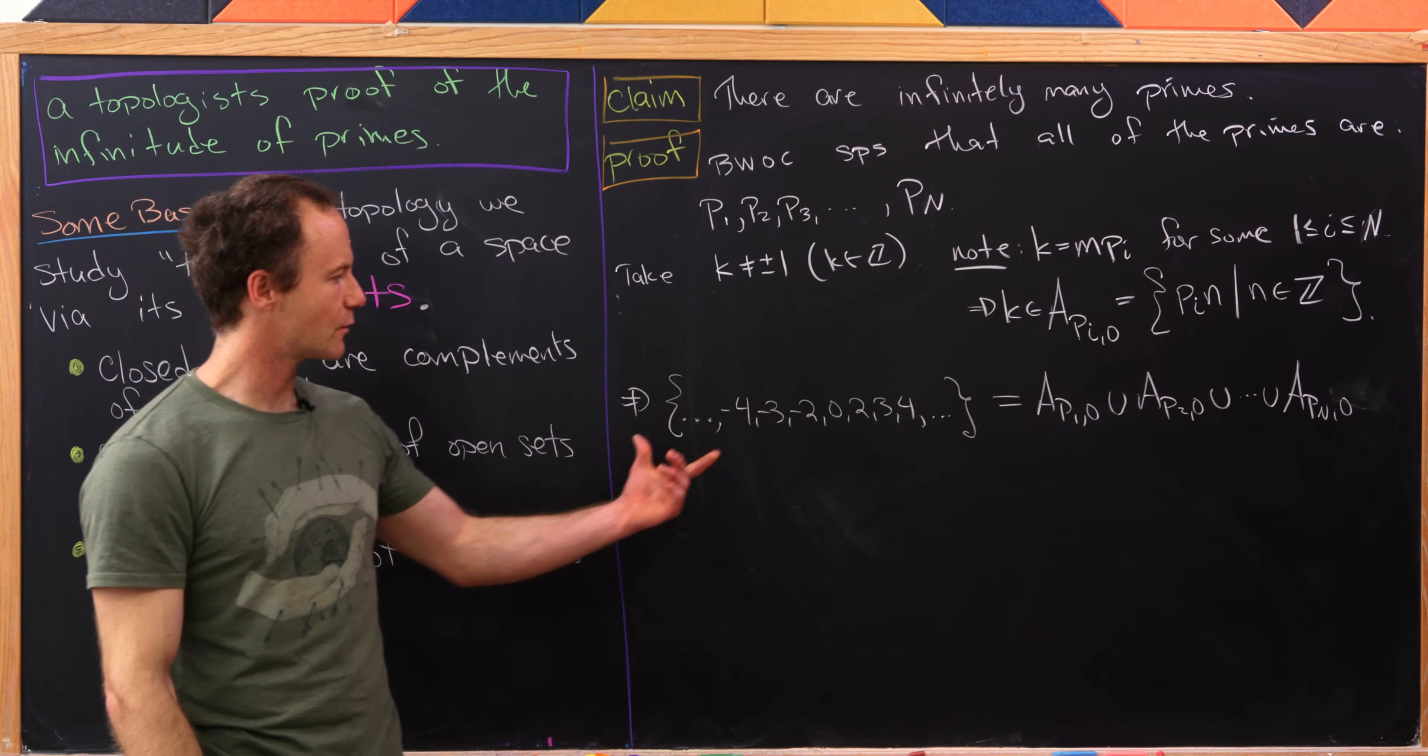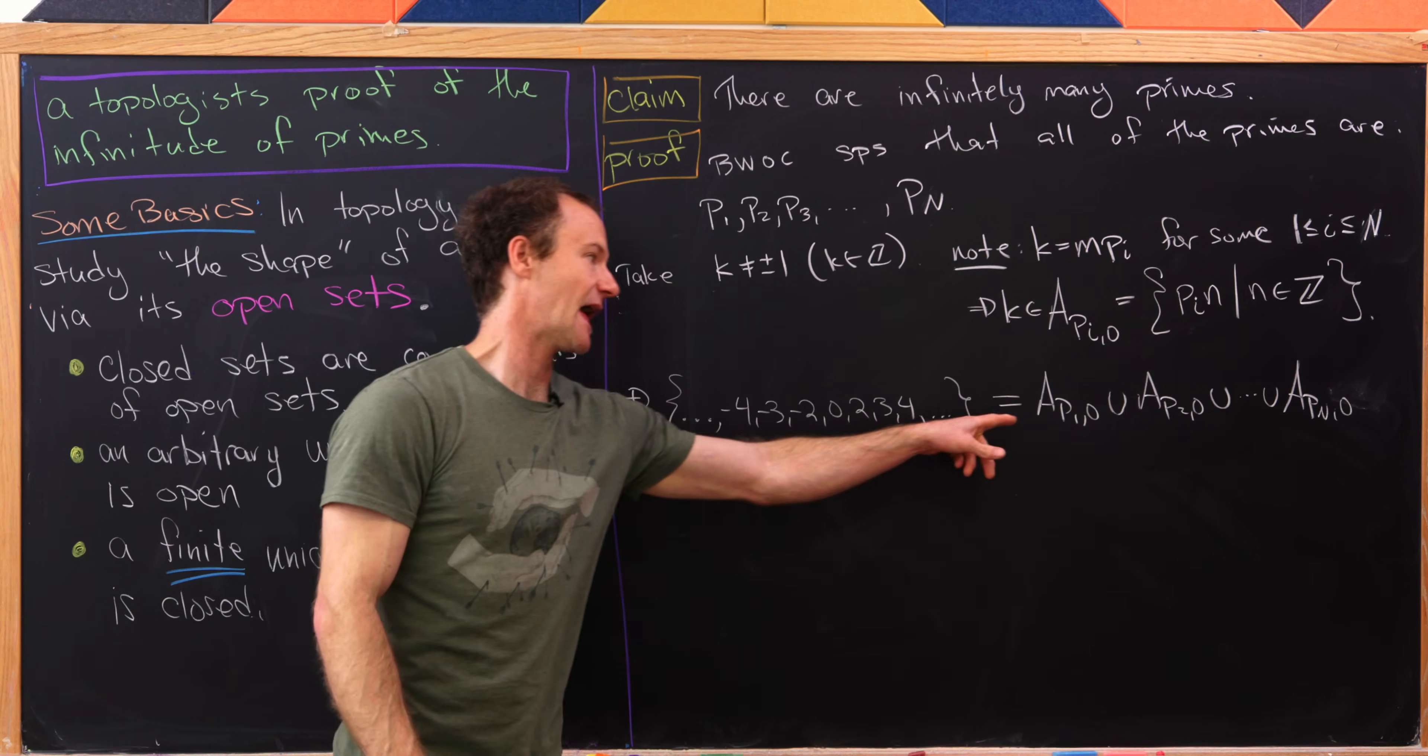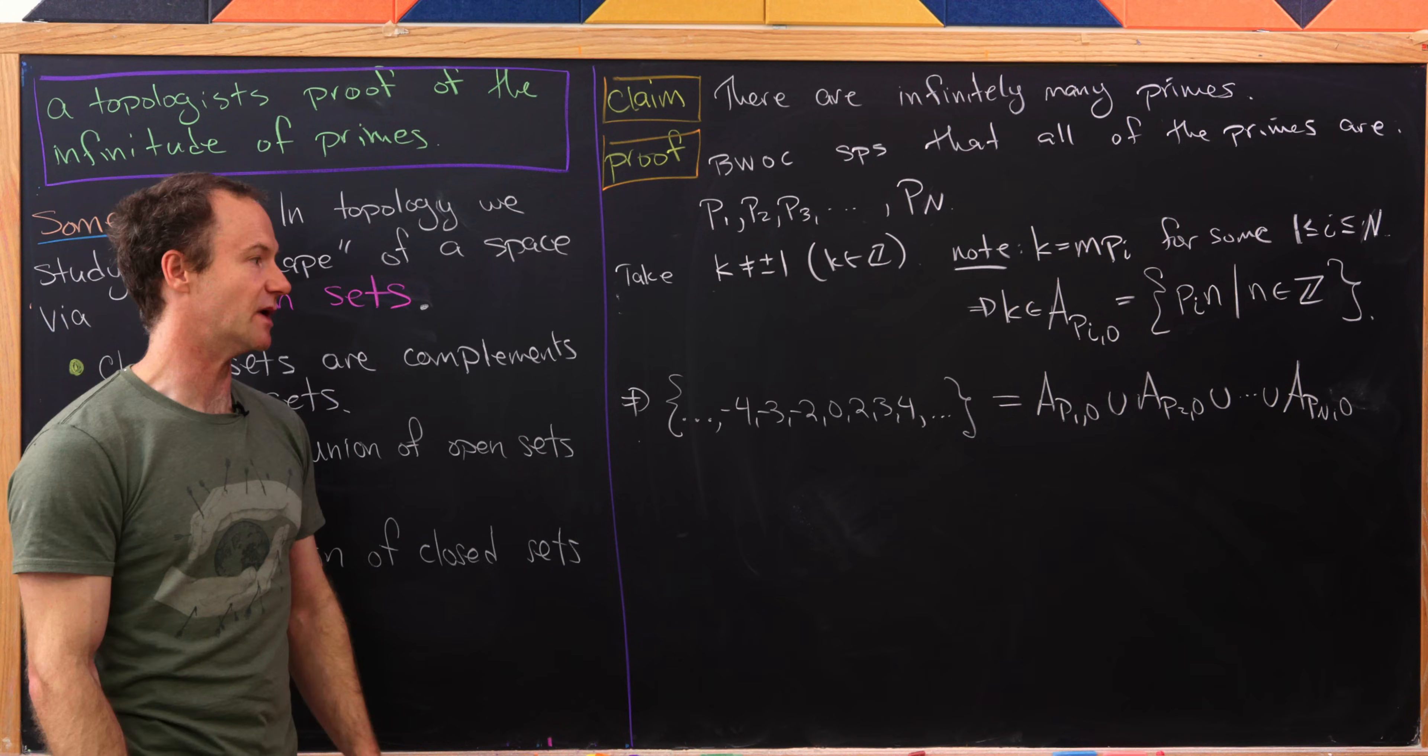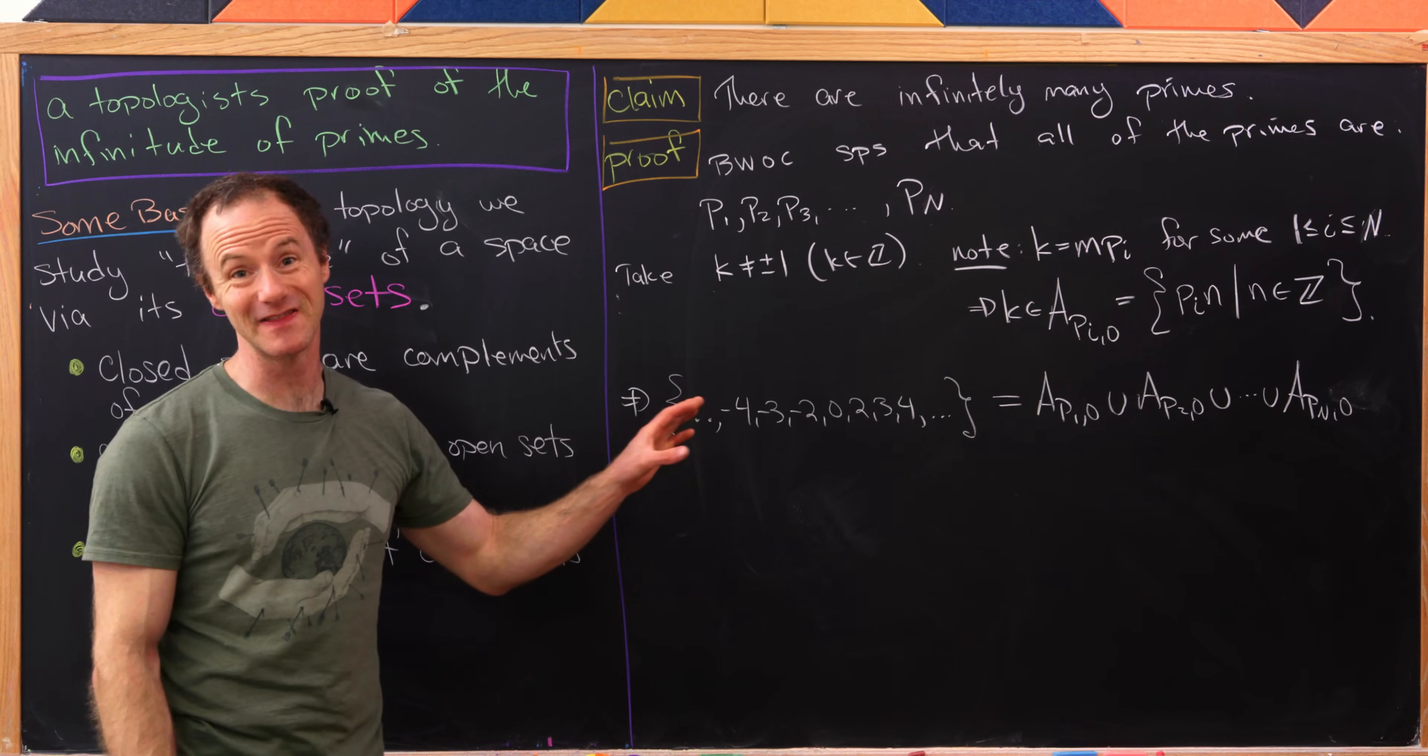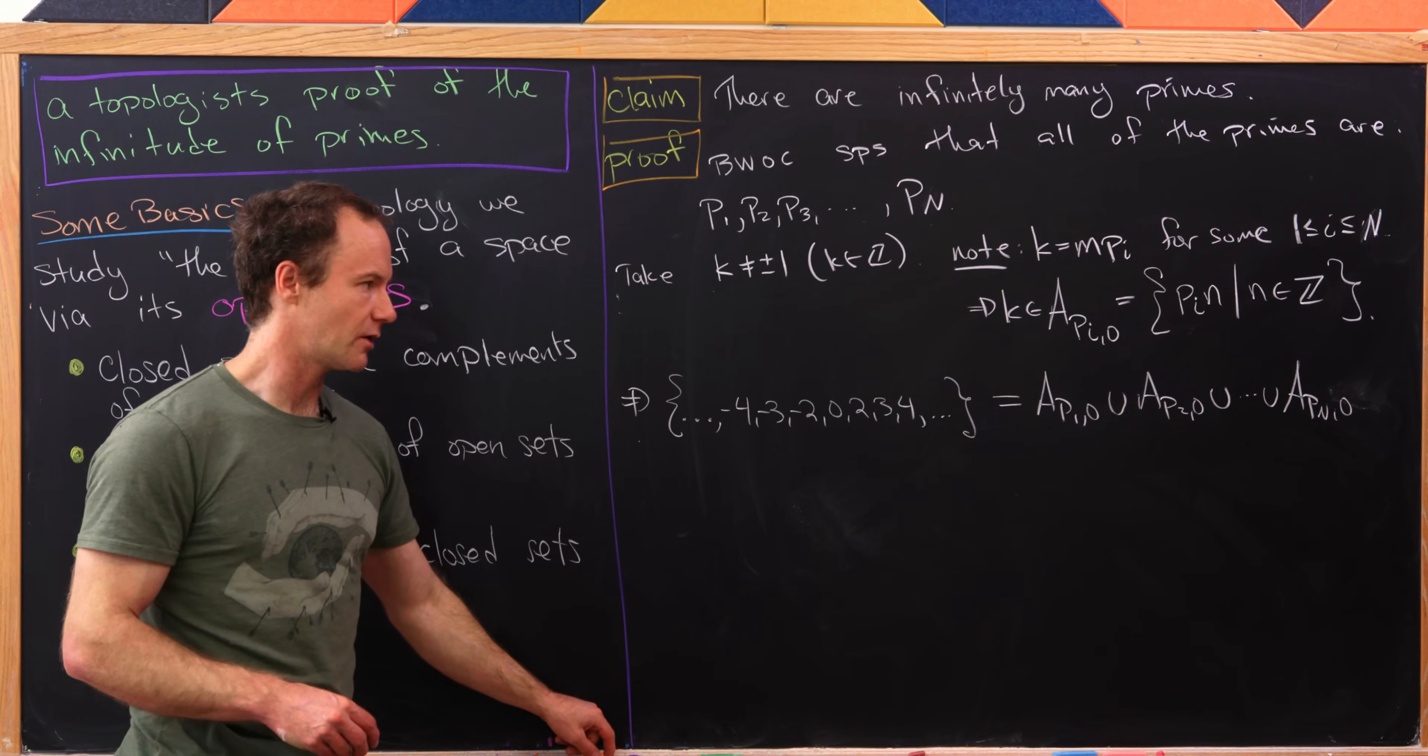Again, how do we know that? Well, we took some random person from here and it had to be in one of those sets by this argument that's just above. Well, I guess that shows that it's a subset. Well, how would you go in the opposite direction? I think that's pretty clear. I'll let you think about how the opposite direction would go.